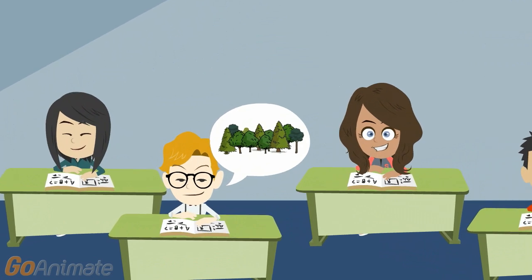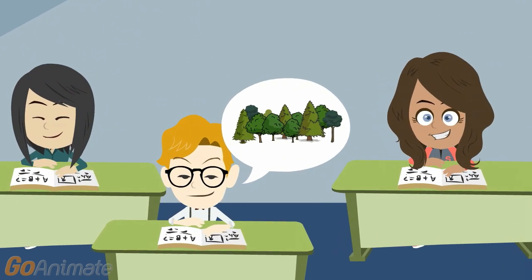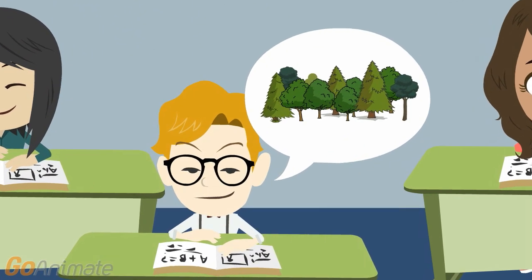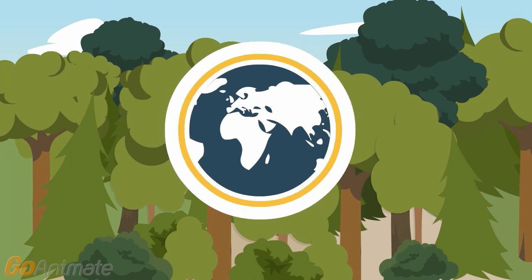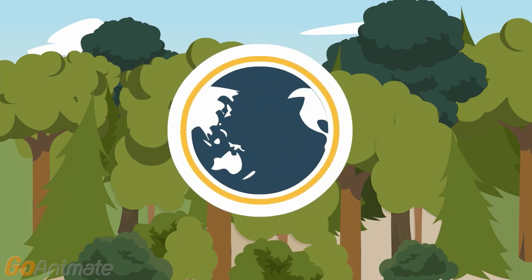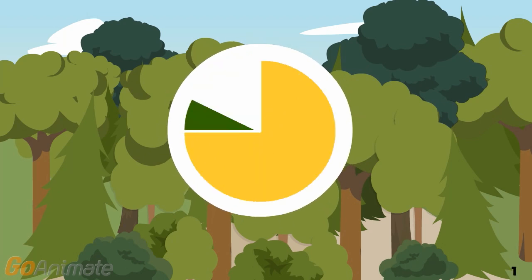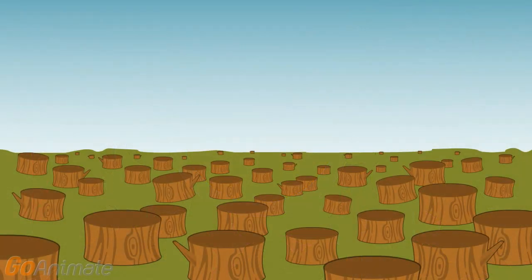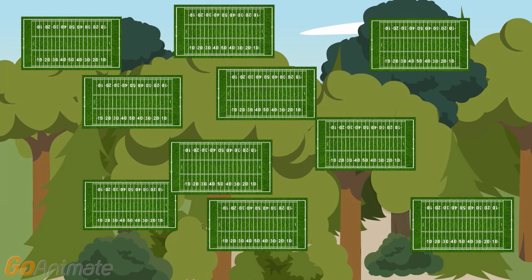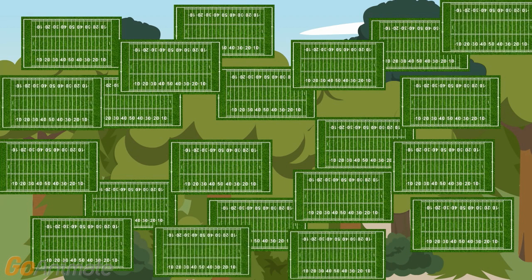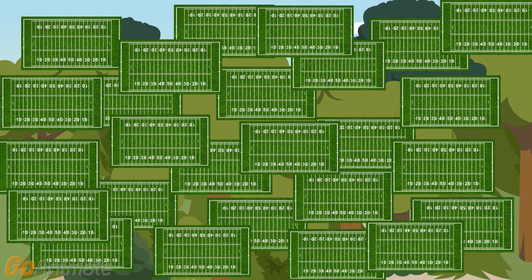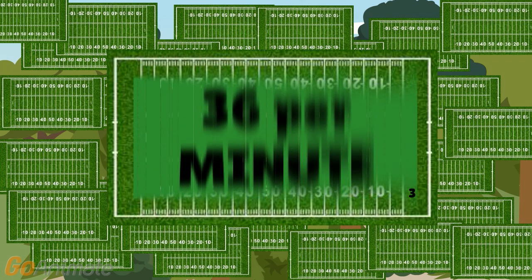So now you may be thinking, why should I care? There are lots of trees and forests on Earth. It's true — there are a lot of trees on Earth. In fact, forest covers a quarter of all land surfaces on Earth. But the problem is the rate at which we harvest them. Currently, humans are cutting down forests at a rate of 36 football fields per minute.